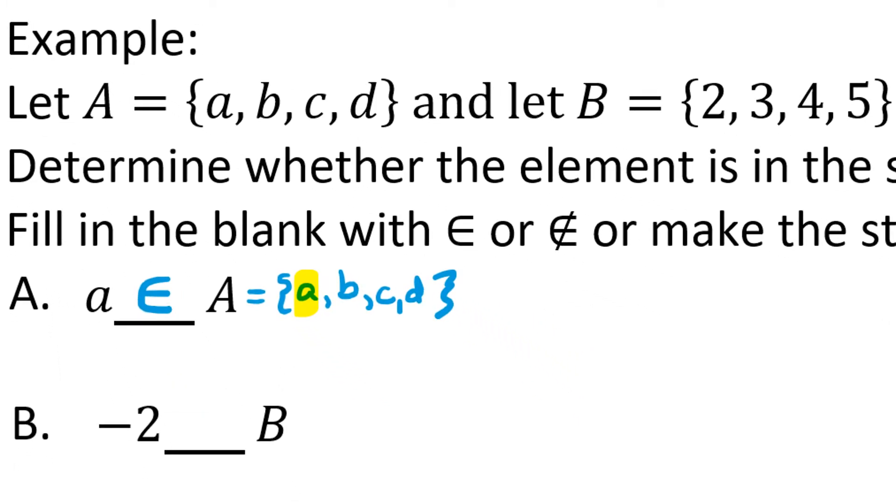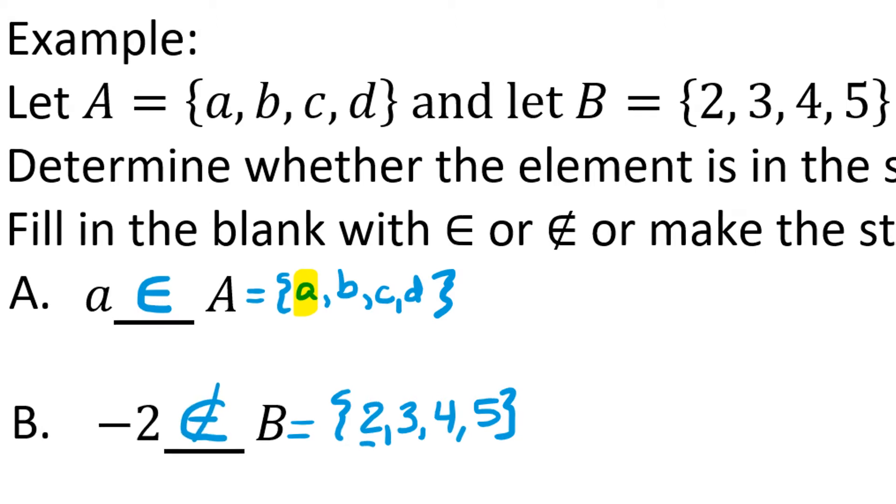Now let's look at part B. For part B, we're asked if negative 2 is an element of the set B. Well, the set B contains 2, 3, 4, and 5. We were told that in the instructions. 2 is not the same as negative 2. There is no negative 2 in this set. So we would say negative 2 is not an element of B.